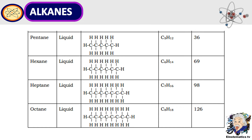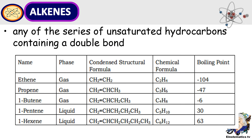Now let's proceed with alkenes. Kung kanina yung alkanes is made up of single bond, yung alkenes naman it is made up of double bond. So yung nagko-connect between hydrogen and carbon, as you can see, are double bonds.